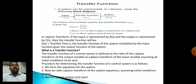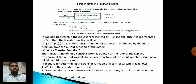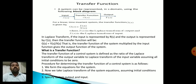A system can be represented using a block diagram where the input is X(s), the output is Y(s), and the transfer function is G(s) for a linear time-invariant system. The transfer function G(s) is given by the output divided by the input: Y(s) / X(s), where Y(s) is the Laplace transform of the output and X(s) is the Laplace transform of the input. If input is R(s) and output is C(s), then G(s) = C(s) / R(s). The transfer function of a control system is defined as the ratio of the Laplace transform of the output variable to the Laplace transform of the input variable, assuming all initial conditions to be zero.